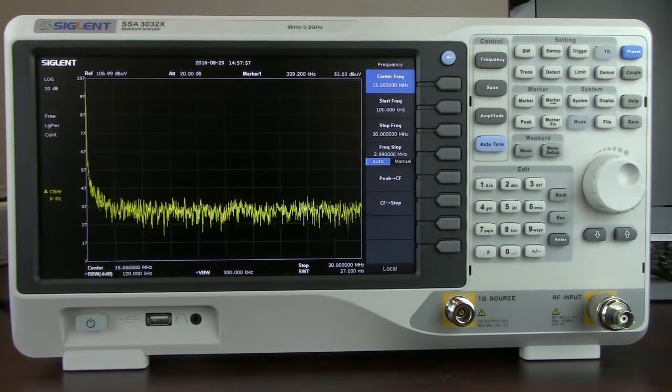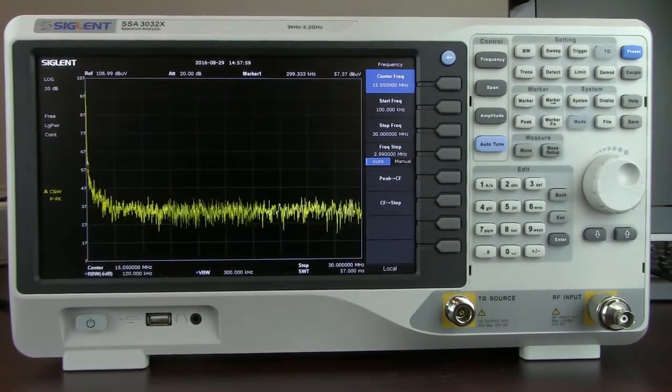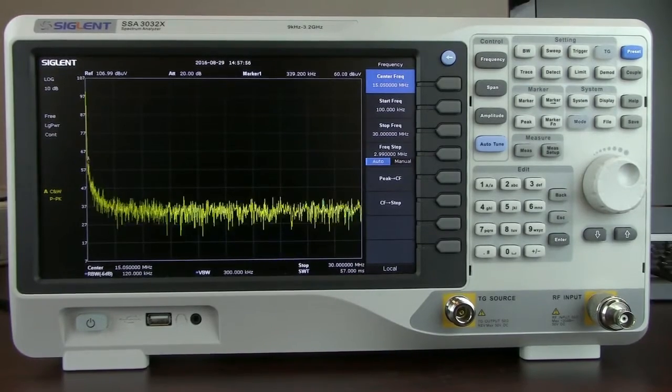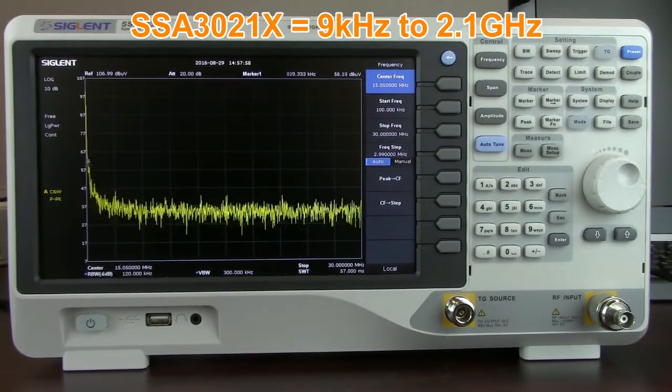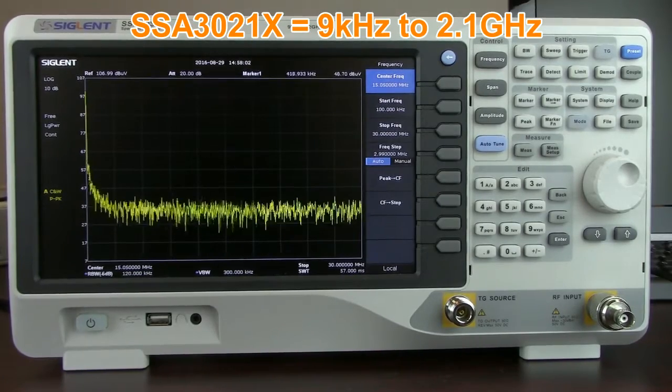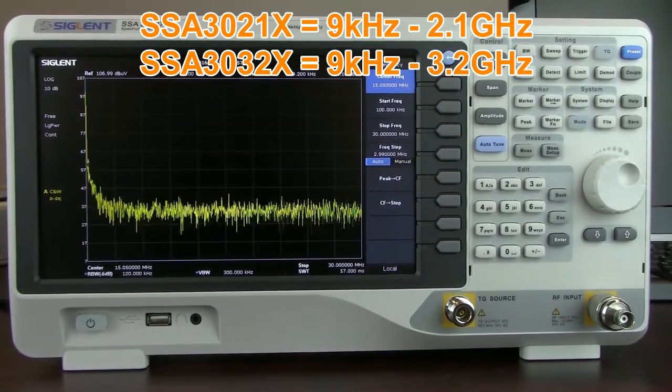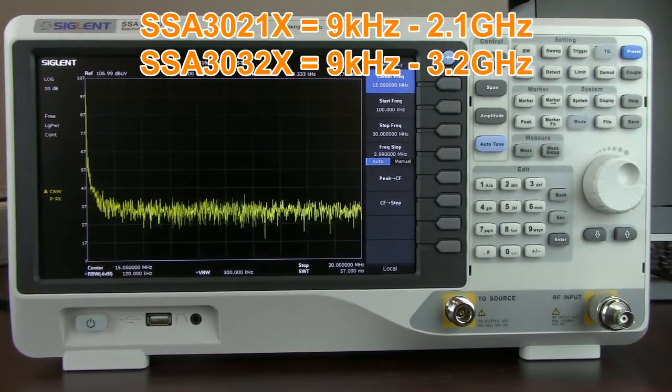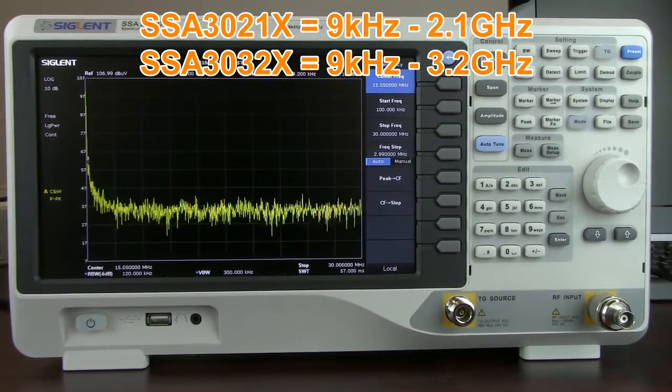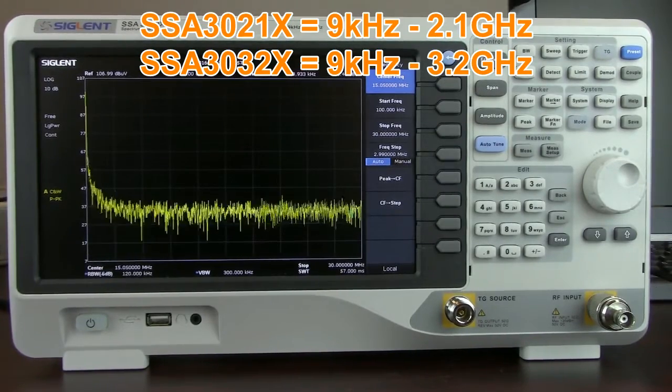In this video we're going to highlight some of the reasons why the SSA 3000X has become so popular. There are currently two models available. The SSA 3021X operates from 9kHz to 2.1GHz and the SSA 3032X operates from 9kHz to 3.2GHz. Both are based on a swept super heterodyne design that has historically provided great performance without a high price tag.